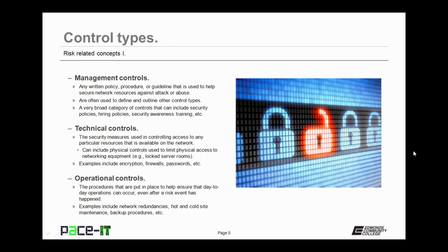And then there are operational controls. These are the procedures that are put in place to help ensure that day-to-day operations can occur even after a risk event has happened. Some examples of operational controls include network redundancies, hot and cold site maintenance, and backup procedures.